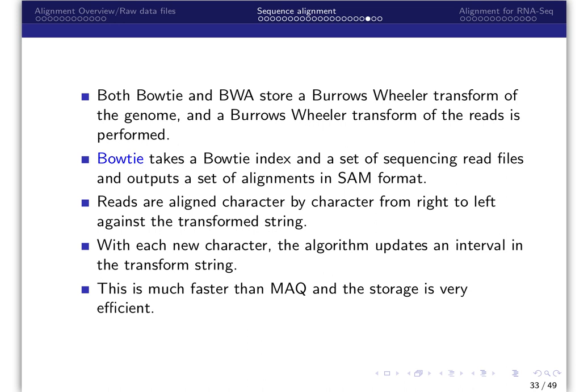Bowtie takes a Bowtie index and a set of sequencing reads and outputs a set of alignments in SAM format. Reads are aligned character by character from right to left against the transform string. With each new character, the algorithm updates an interval in the transform string. This is much faster than MAC, and the storage is very efficient. Bowtie can be run from the command line. Arguments include the genome, FastQ file, and output file.